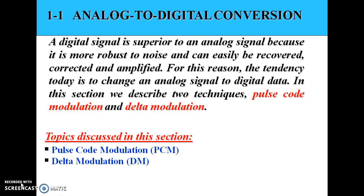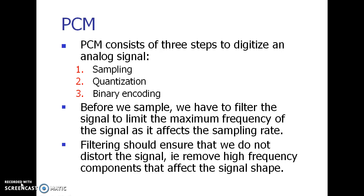Today I will be discussing pulse code modulation. PCM mainly consists of three main steps required to digitize an analog signal: first, we have to sample the signal; then quantize it — that is, the quantization process; and then binary encoding.